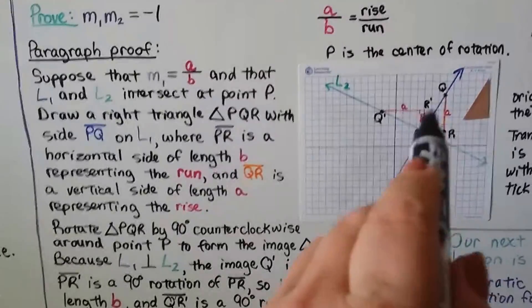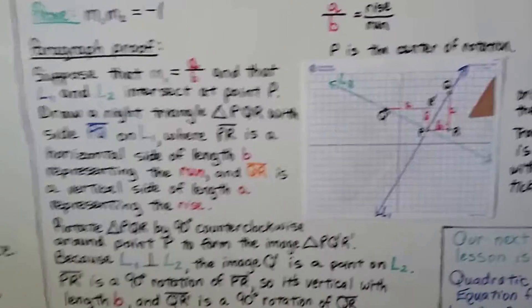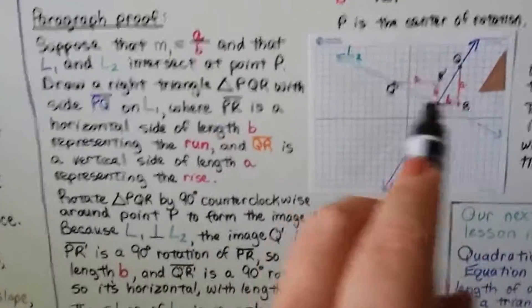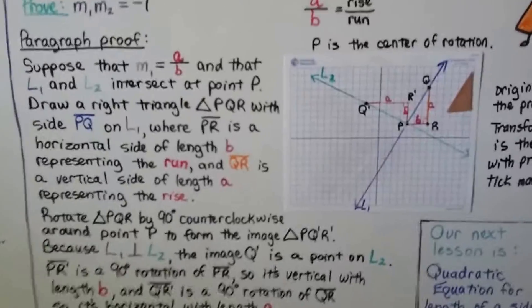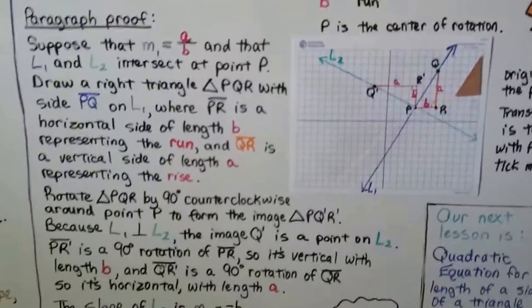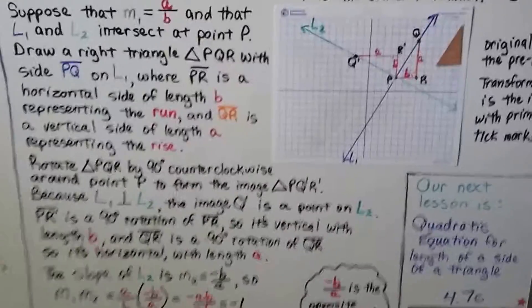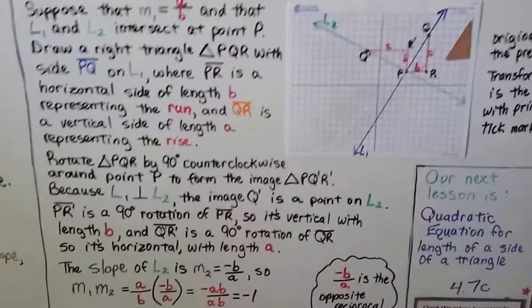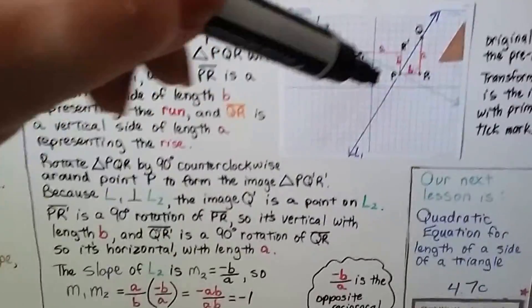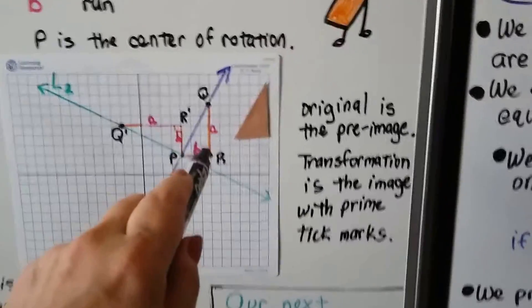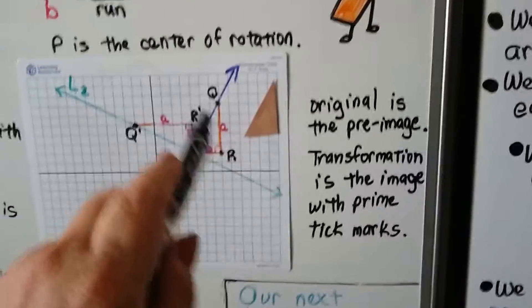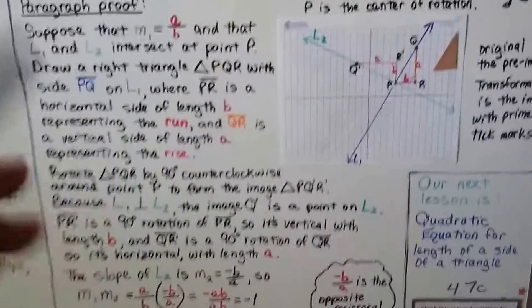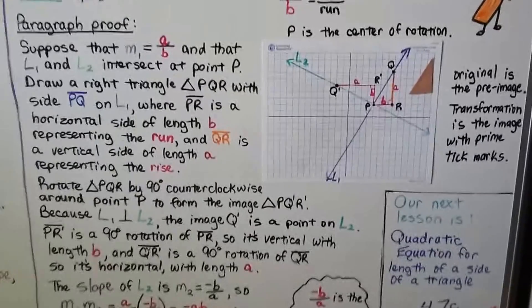We draw right triangle PQR with side PQ on l sub 1, where PR is a horizontal side of length B representing the run, and QR is a vertical side of length A representing the rise. We rotate triangle PQR 90 degrees counterclockwise around point P to form the image P, Q prime, R prime. P is the center of rotation so it doesn't move, but R moves to R prime and Q moves to Q prime. Because l sub 1 is perpendicular to l sub 2, the image point Q prime lies on l sub 2 (the green line).